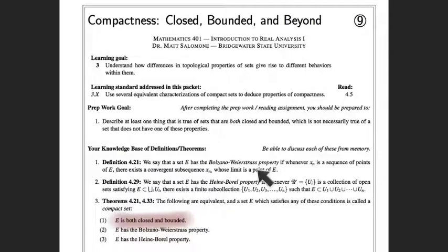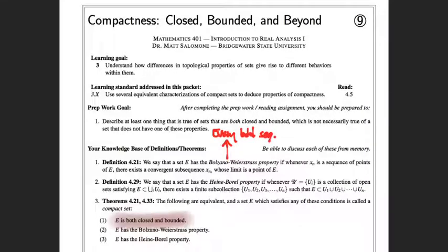Bolzano-Weierstrass we've heard about before. What else do we know in our course that has Bolzano and Weierstrass's names attached to it? The Bolzano-Weierstrass theorem says that every bounded sequence — I'll use BDD to abbreviate that — every bounded sequence has a convergent subsequence.